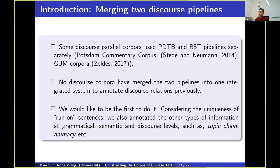We found that some discourse parallel corpora used PDTB and RST pipelines separately, such as PDTB and RST corpora or GUM corpora. However, no discourse corpora have merged two pipelines into one integrated system to annotate discourse relations previously. That's why we want to use the two pipelines together to annotate Chinese run-on sentences. We also annotated other types of information at the grammatical, semantic, and discourse levels.